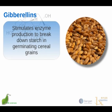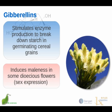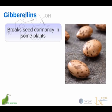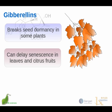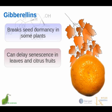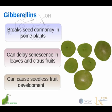Gibberellins also stimulate the breakdown of starch in germinating cereal grains, which has some interesting opportunities for use. In some flowers, gibberellins introduce maleness in plants that have separate male and female flowers — that is, dioecious plants — so gibberellins play a role in sex expression. They also play a role in breaking seed dormancy in some plants and allowing seeds to germinate. Gibberellins can delay senescence in leaves and in some citrus fruits, and they can even cause seedless fruit development. Seedless grapes, for example, are induced by spraying the grapes with gibberellins so they develop without seeds.